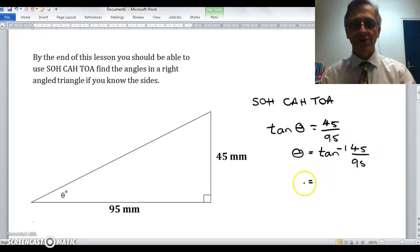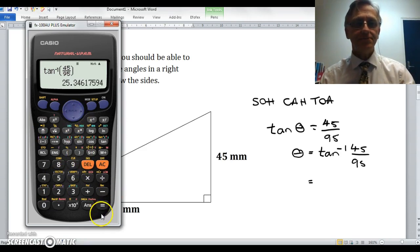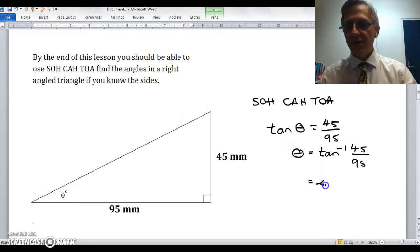Now this I can do in my calculator. I do the opposite of tan, so shift tan brings up tan with a little minus 1, that's inverse tan, and it's 45 over 95, close the brackets, and if I push equals, gives it to me as a decimal, so it's 25.35 degrees.